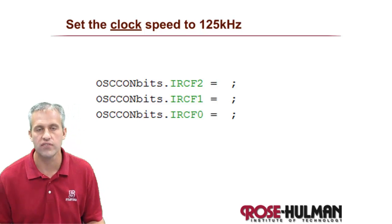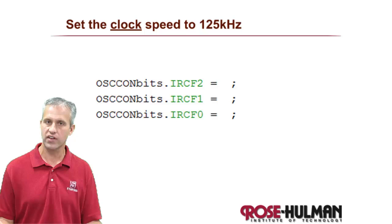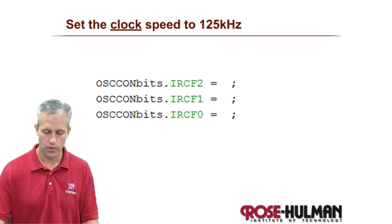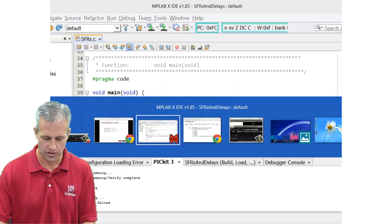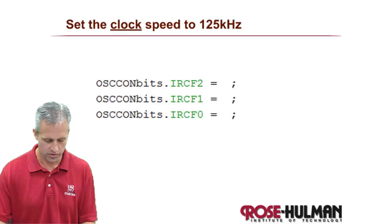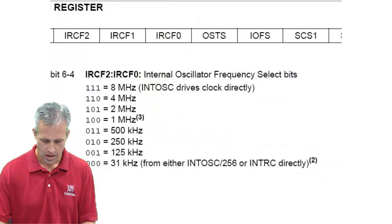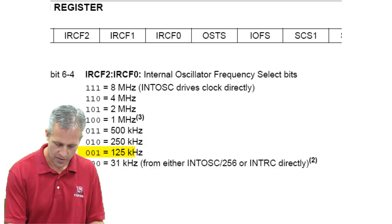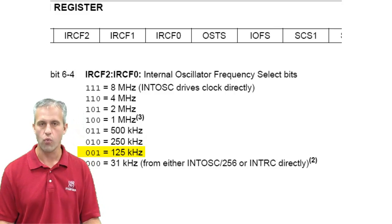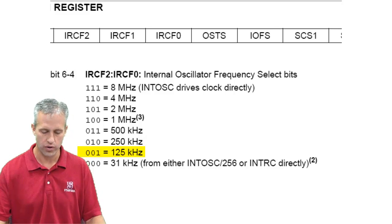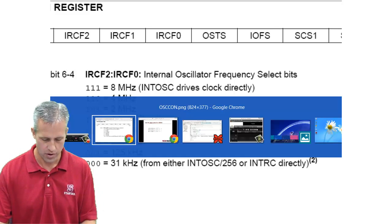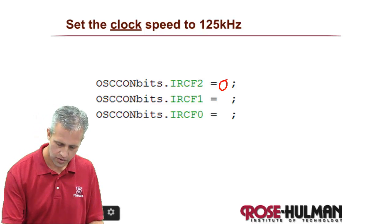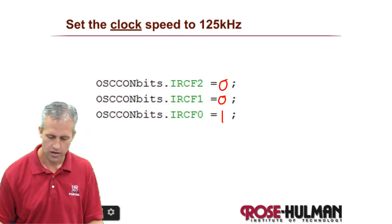Just to see if you can do it — see if you can set it to 125 kHz. It should be easy. So 125 kHz — go look at a handy table. It looks like 125 kHz is zero, zero, one. That's nearly as slow as we can go; that's actually quite slow. So if I wanted to fill this out, it would just be zero, zero, one. Pretty easy.